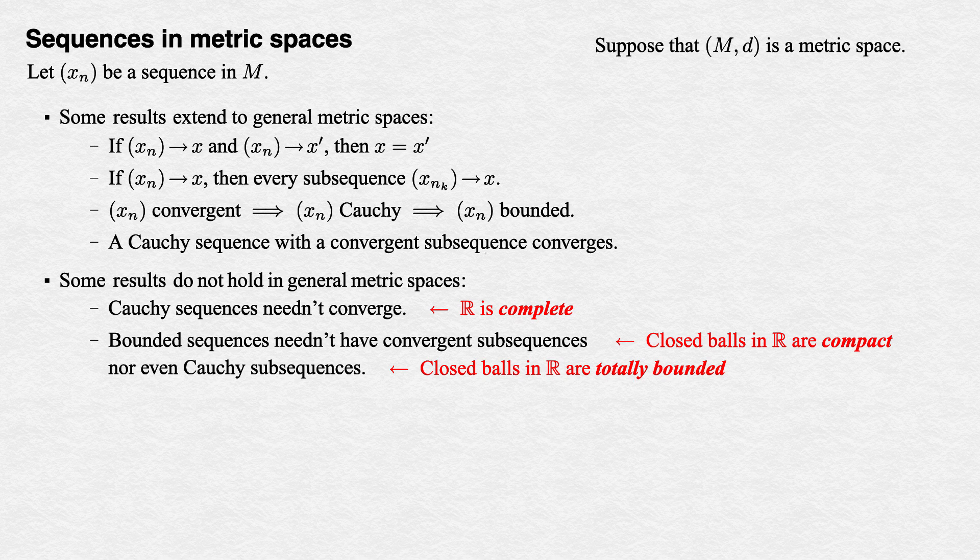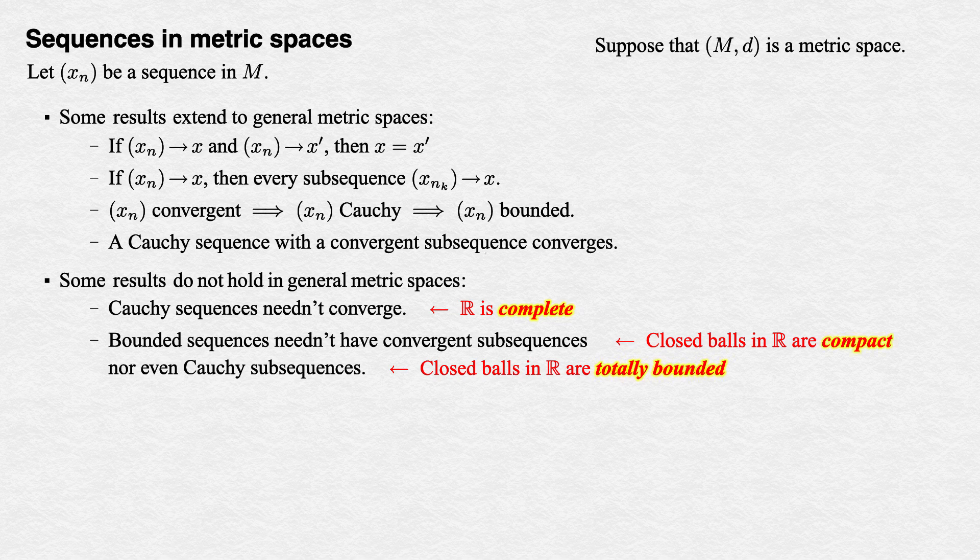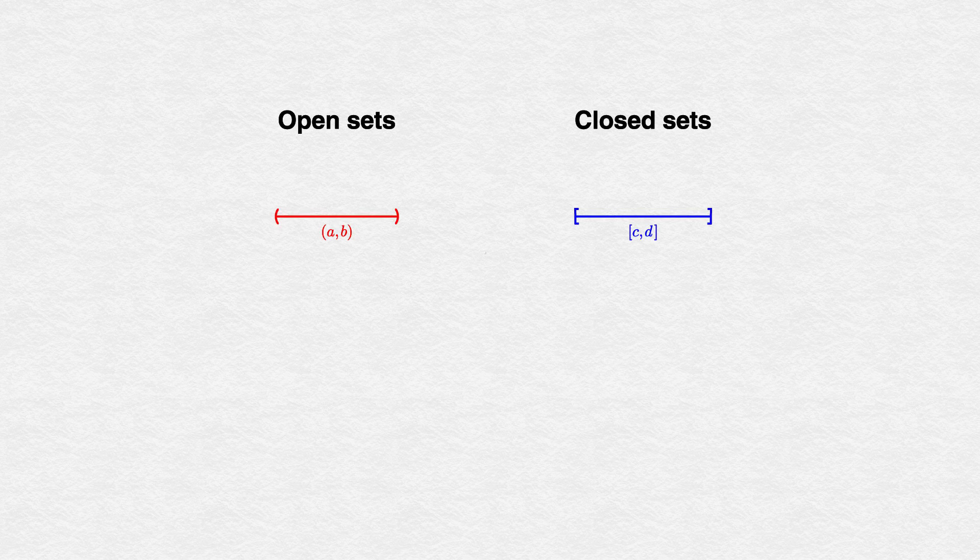It looks like we've ended this video with some loose ends to tie up, but we'll discuss these properties of being complete, totally bounded, and compact before we finish our study of metric spaces. In our next video, we'll discuss open and closed sets in metric spaces, of which open and closed intervals in the real line, and open and closed balls in metric spaces, are examples. Till then!